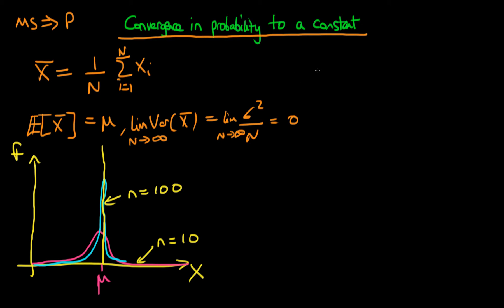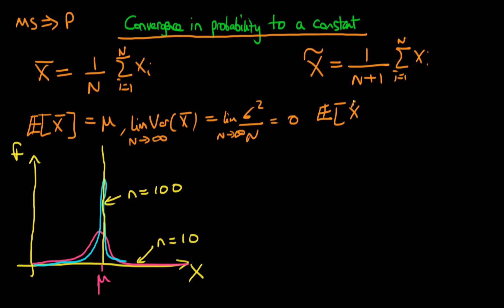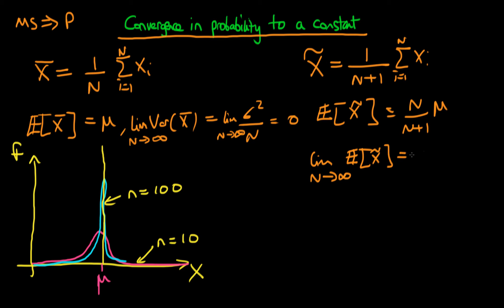The second example is x̃, which is similar to the sample mean except it equals 1 over (n+1) times the sum from i equals 1 to n of xᵢ. It's easy to show that the expectation of x̃ equals n over (n+1) times μ. If we take the limit as n tends to infinity, the n over (n+1) term approaches 1, so the expectation approaches μ. So even though there is bias in a finite sample, as n tends to infinity the bias is removed.